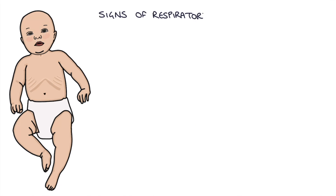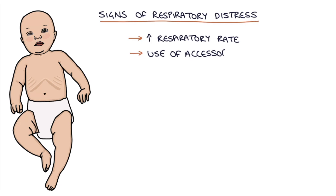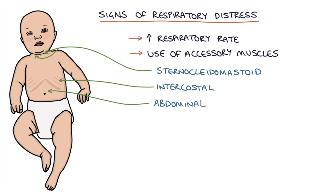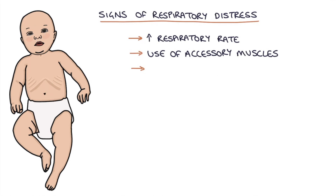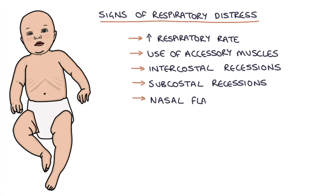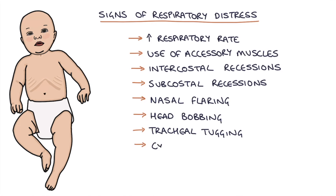The signs of respiratory distress are fundamental to learn in pediatrics. These include a raised respiratory rate; use of accessory muscles when breathing, such as the sternocleidomastoid muscle in the neck, the abdominal muscles, and the intercostal muscles between the ribs; intercostal and subcostal recessions, where the skin between or just under the ribs sucks in with each breath; nasal flaring, where the nostrils flare to try to get extra air in; head bobbing, where the head bobs with the breathing; tracheal tugging, where you can see the trachea in the neck sucking in with each breath; and cyanosis, a blue discoloration of the skin due to low oxygen saturation.